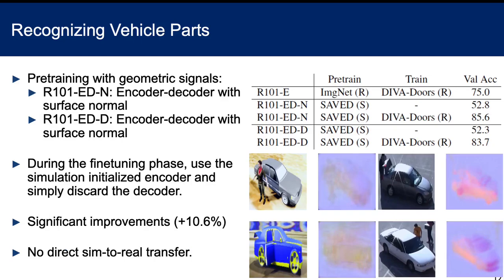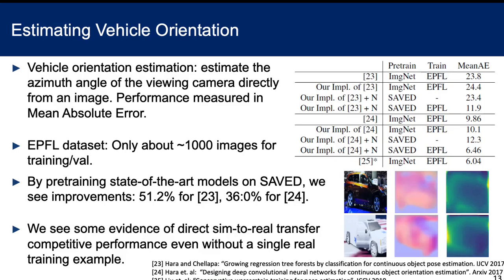When we attach a decoder to the output of an encoder and pre-train using our multi-task framework, we see bigger gains. We tried a model that predicts normals and a model that predicts depth, and we show pretty much equivalent performance gains.